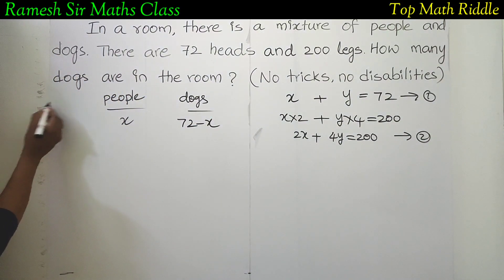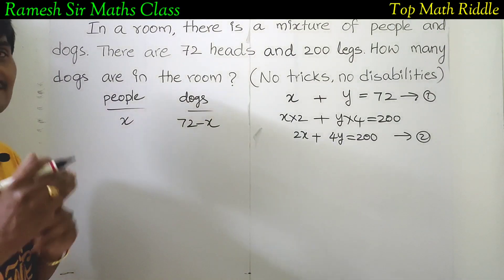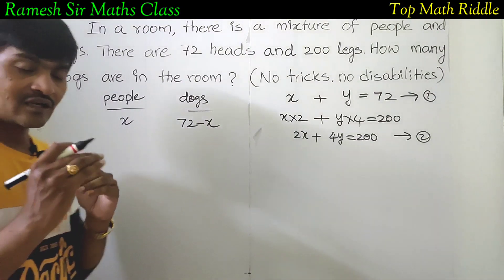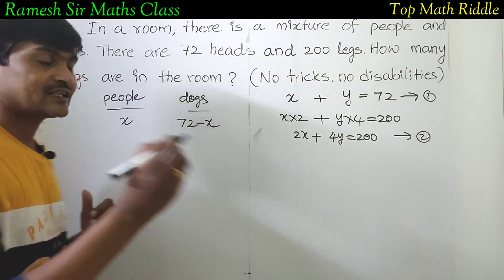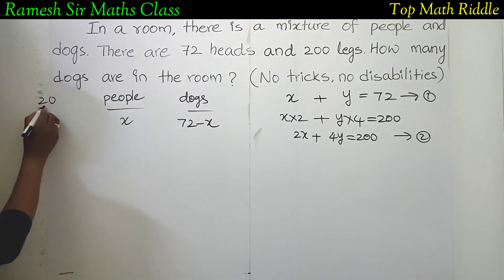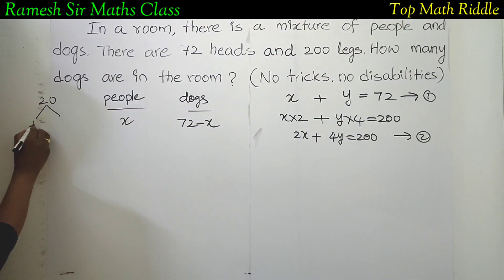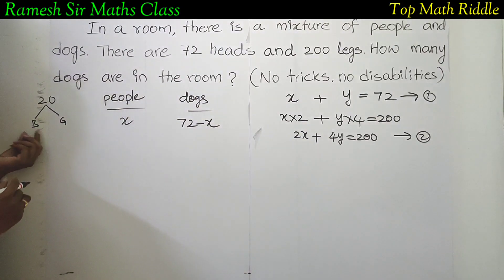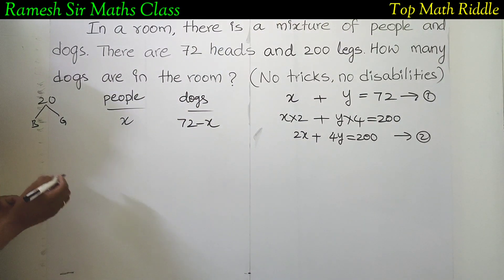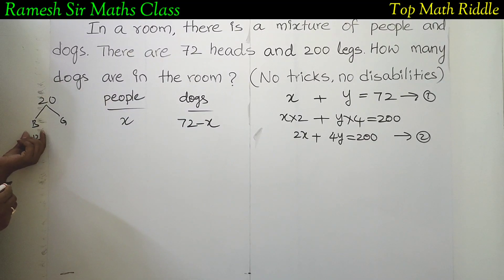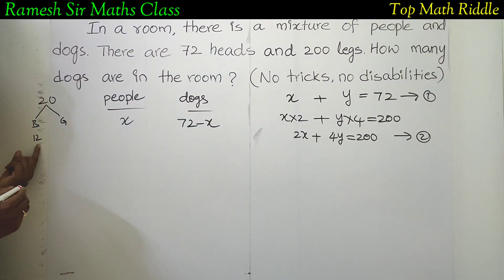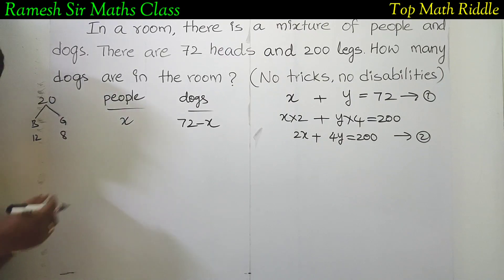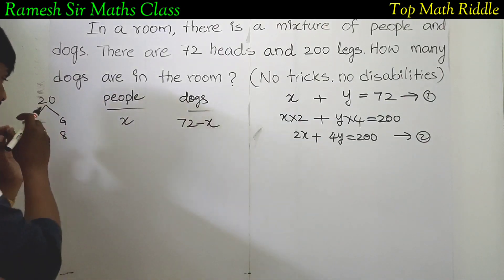For example, in a classroom there are some boys and girls who total 20. If the number of boys is 12, then the number of girls is 20 minus 12. That's the concept — if you know one quantity and the total, you subtract to find the other.